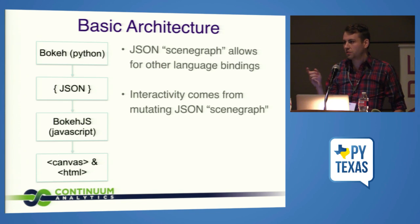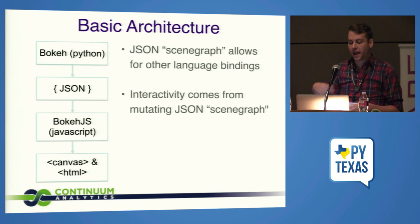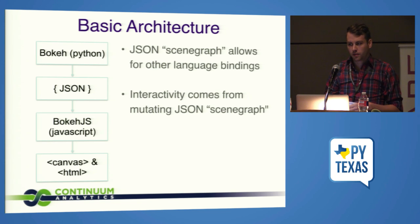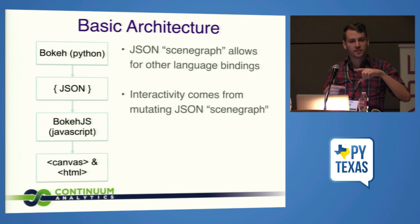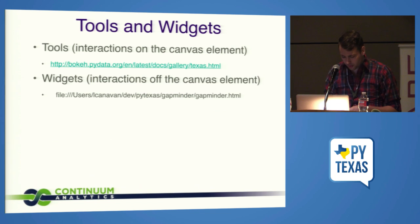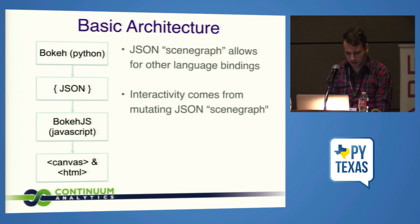Most of the interactivity comes from mutating this JSON scene graph. So when you want interactivity — like if you use a box zoom and zoom over an area of the plot — what's actually happening is in the JSON scene graph you're just changing the range shown in the plot and then triggering Bokeh JS to re-consume and re-render the plot. So let's talk about tools and widgets. Tools are interactions on the canvas element.